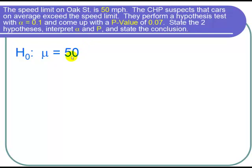Now let's find the alternative hypothesis. The key word here is exceed. The word exceeds is the same as greater than. Our alternative hypothesis is that the mean, mu, is greater than 50.